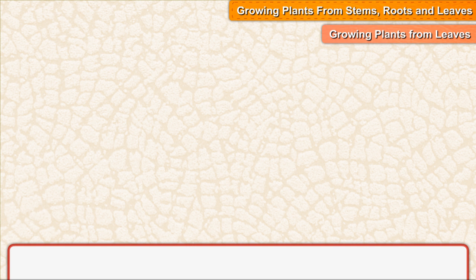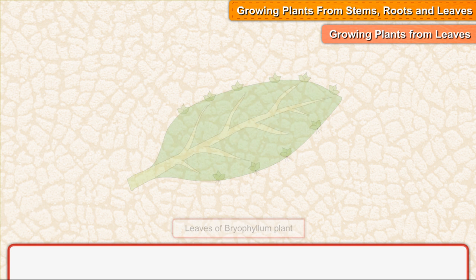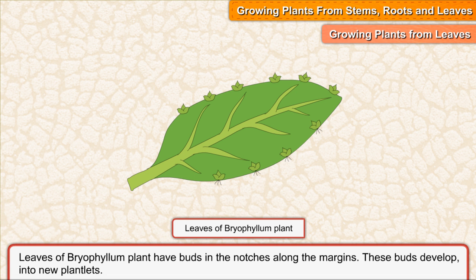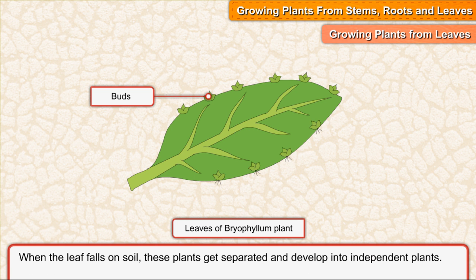Growing plants from leaves. Leaves of the bryophyllum plant have buds in the notches along the margins. These buds develop into new plantlets. When the leaf falls on soil, these plantlets get separated and develop into independent plants.